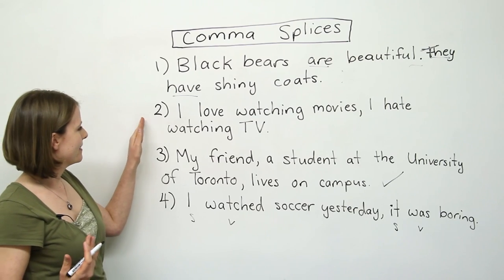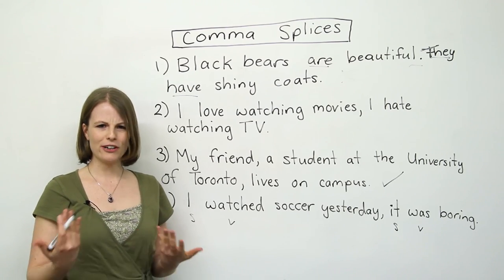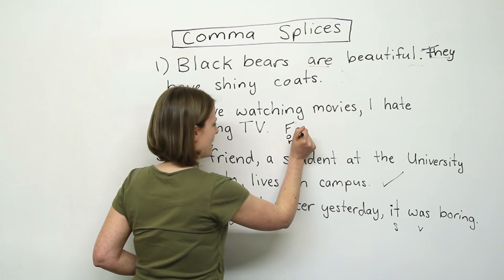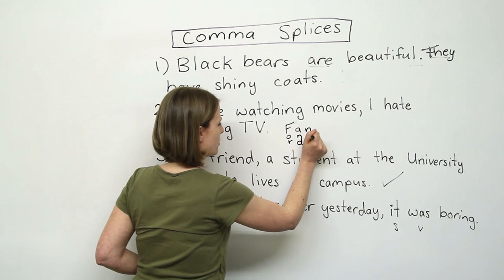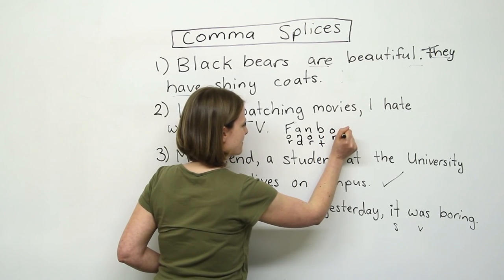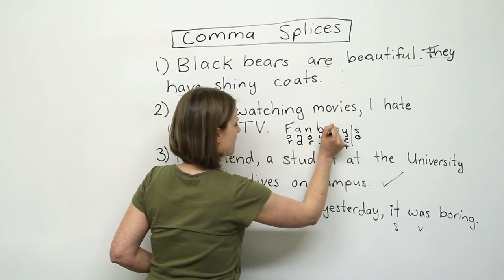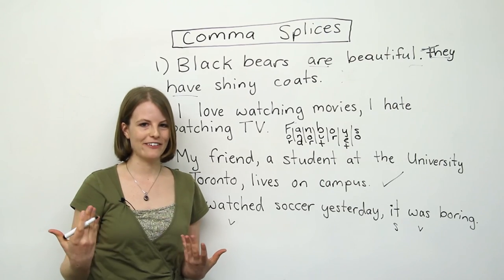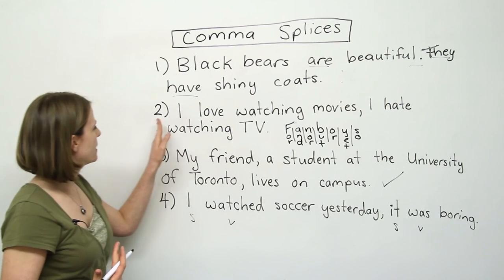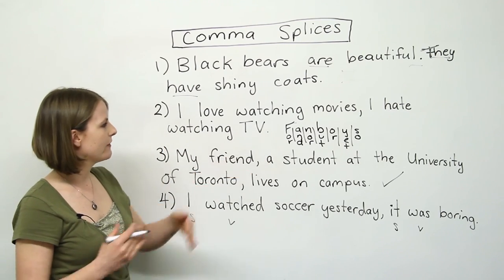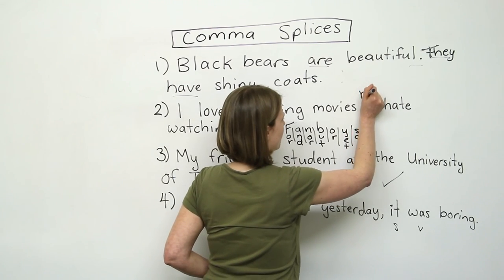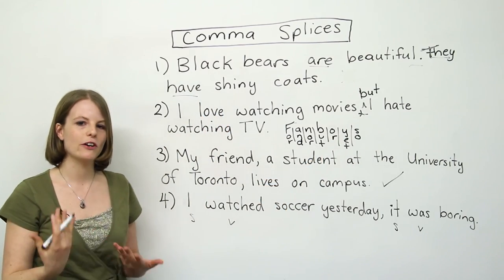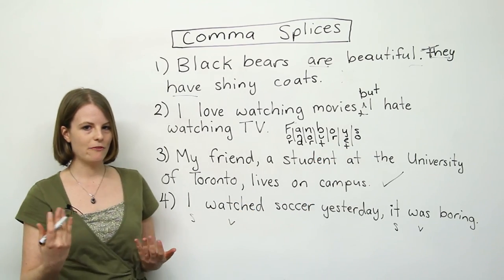Another alternative is using a coordinating conjunction. These are known as FANBOYS: For, And, Nor, But, Or, Yet, and So. If you use one of these — and it has to make sense in the context of the sentence — this is another way to deal with comma splices. For example: 'I love watching movies, but I hate watching TV.' It's important to notice the comma stays — we don't remove the comma when we're using these FANBOYS. That's the second way to correct a comma splice.